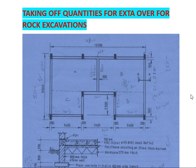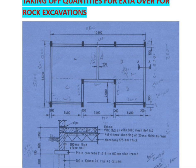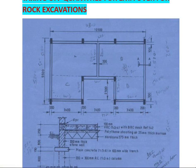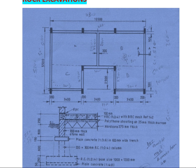This is our plan. We have some columns here, and we want to see if the rocks are occurring in the columns or in the strip foundation. These are our columns — two, three, four, five, six, seven, eight, nine, ten — we have ten columns.